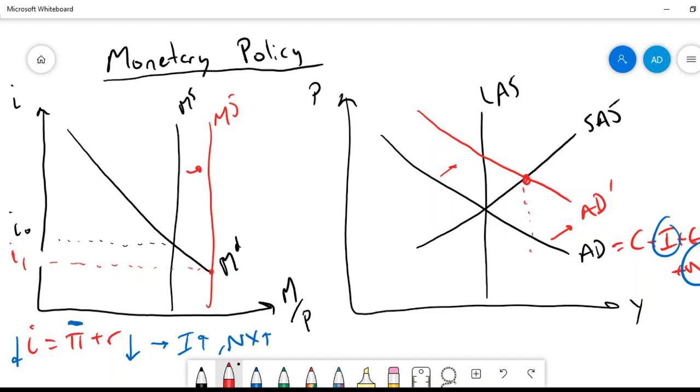But this short-run equilibrium here at Y1, P1 is not a sustainable equilibrium. It's above long-run aggregate supply. None of the money printing that the central bank did affected our long-run aggregate supply—we still have the same amount of technology, the same number of workers, the same number of factories. Extra dollar bills don't change any of that. What happens next when the economy is running unsustainably hot?